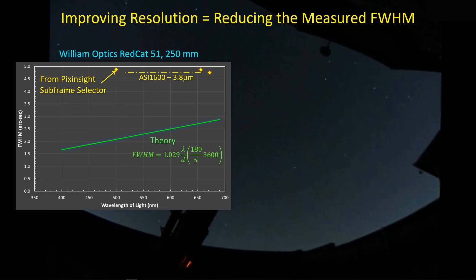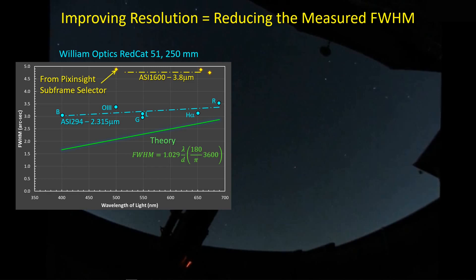I showed this graph sometime back in another video. I'm comparing the actual measured full width at half maximum with my ASI 1600 and the 3.8 micron pixel size and plotting that on this graph. What you see here is the theoretical full width at half maximum based solely on the wavelength of color you're looking at and the diameter of the aperture of the telescope — theory meaning the telescope is in space. So we're not going to see this theoretical line. Now when I take a look at the data I've collected with the ASI 294 and the RedCat 51, that line shows a significant improvement.